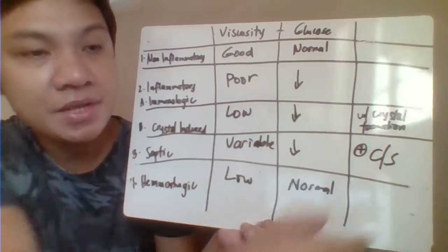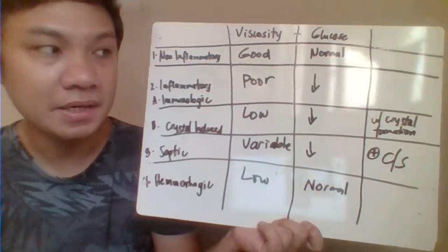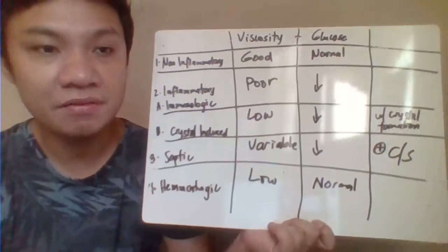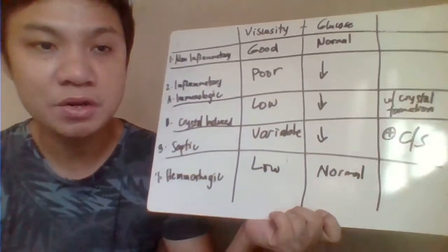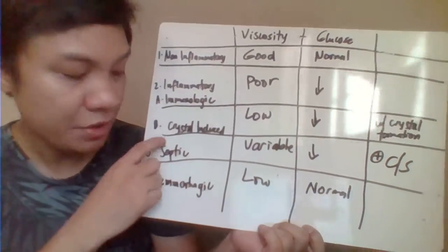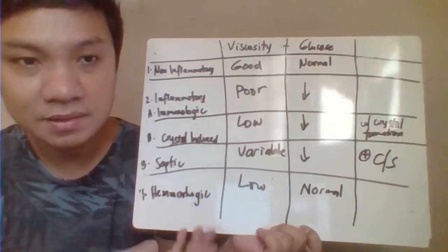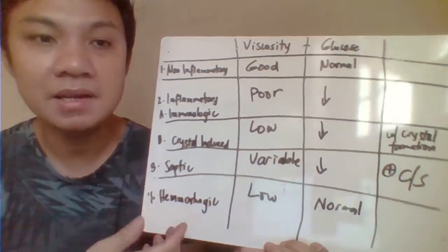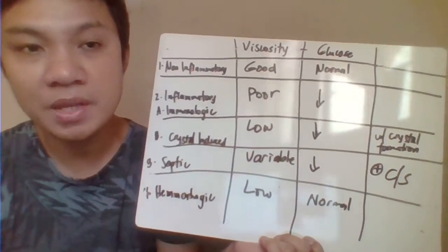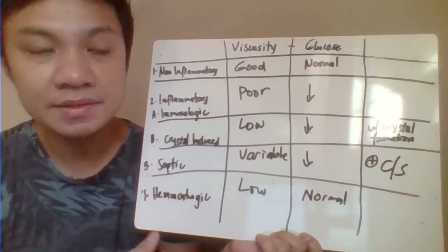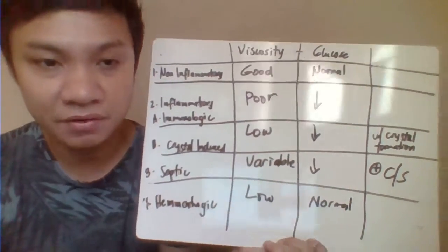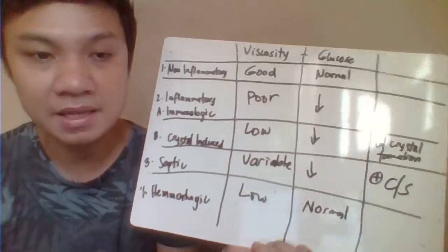For crystal-induced arthritis, we look for the presence of crystals during microscopic identification. For septic arthritis, since this is a microbial mechanism, you can expect that when doing culture and sensitivity and Gram stains, there will be presence of bacteria.